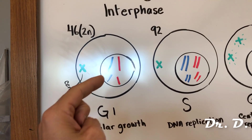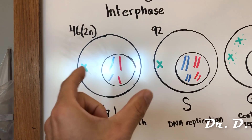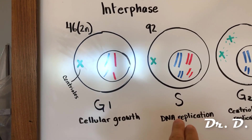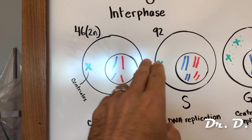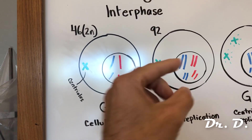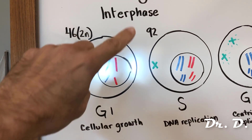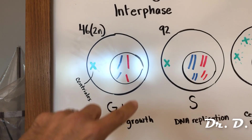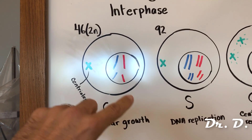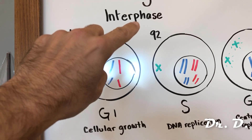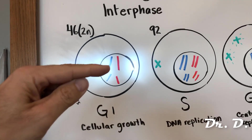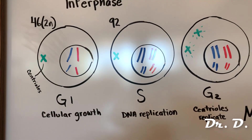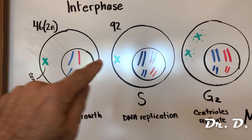Usually, if the cell wants to reproduce or divide, it will proceed to S phase. But if the cell does not get clearance to go into S phase, it will exit the cell cycle and enter what's known as G0. Be aware that the cell can exit the cell cycle and go from G1 to G0. But when the cell does get the go-ahead, it proceeds to S phase.